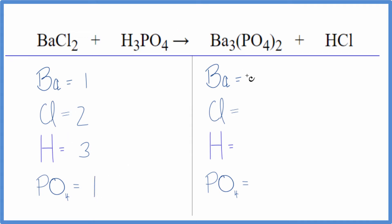Product side: three bariums, one chlorine, one hydrogen, and the phosphate - we have two of those.